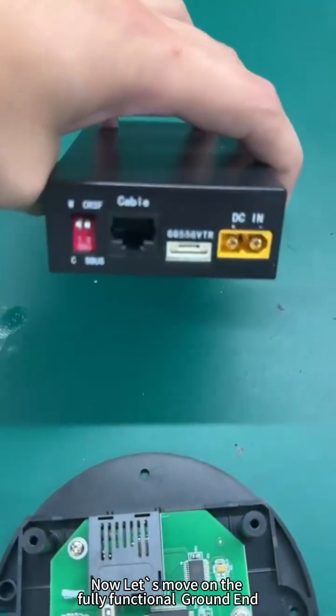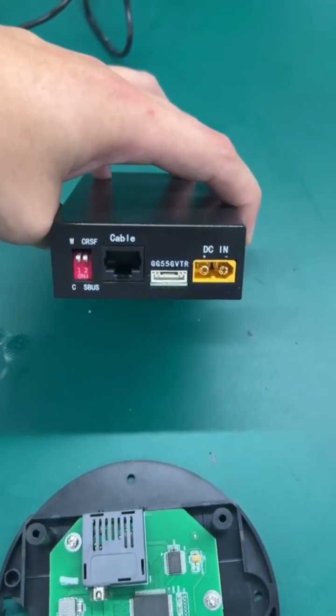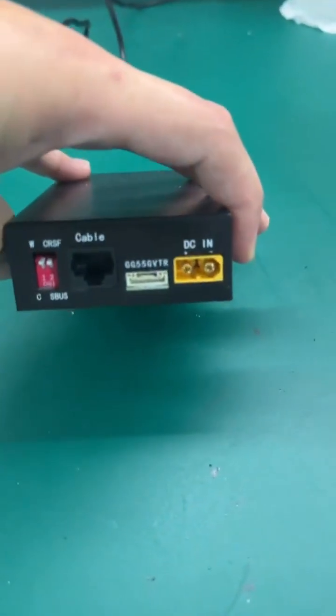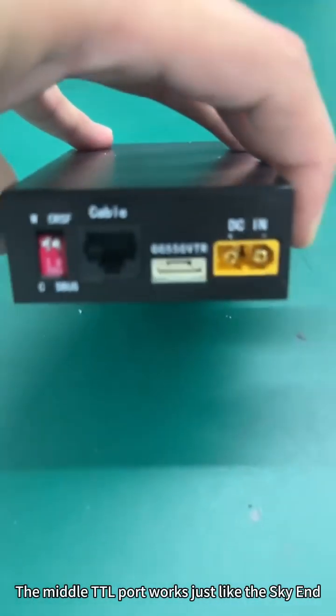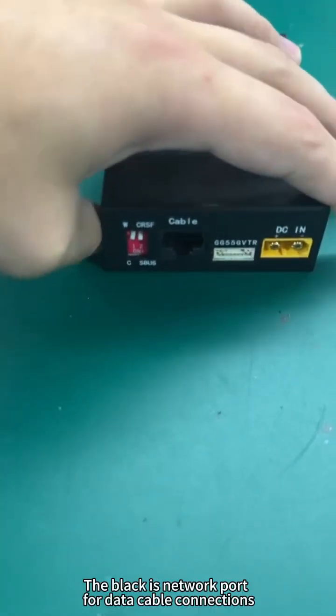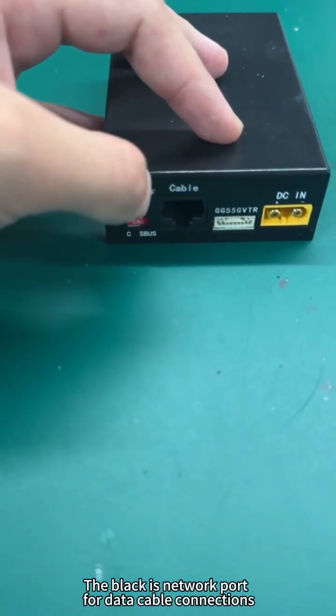Now let's move on to the fully functional ground end. The yellow port on the right is for its power input. The middle TTL port works just like the sky end. The black is a network port for data cable connections.